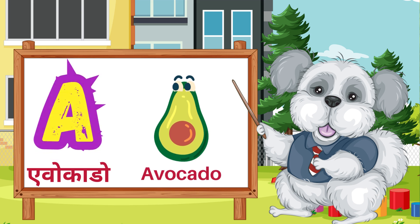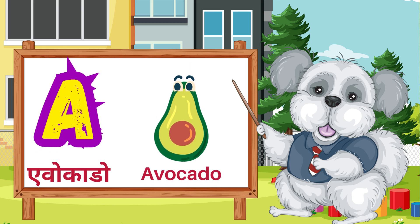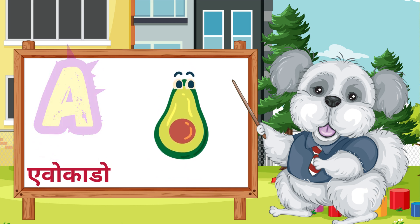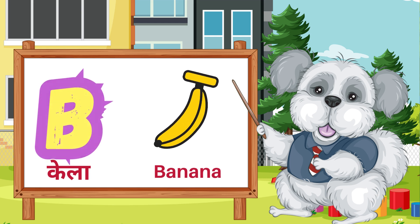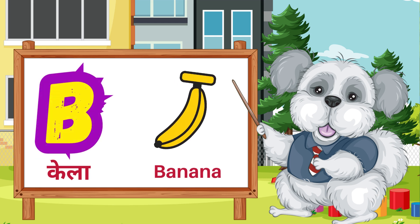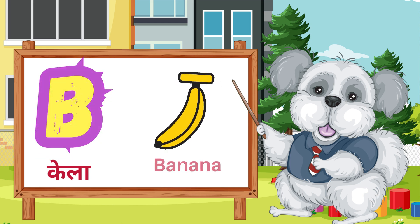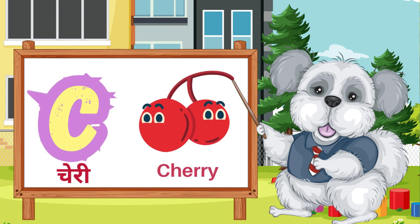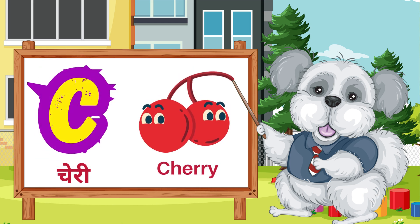A is for avocado. B is for banana. C is for cherry.